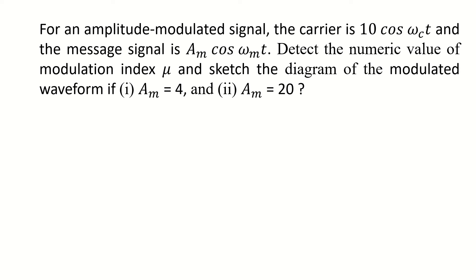For an amplitude modulated signal, the carrier is 10 cos ωc t and the message signal is Am cos ωm t. That is the carrier as well as the message signal or signal tone.